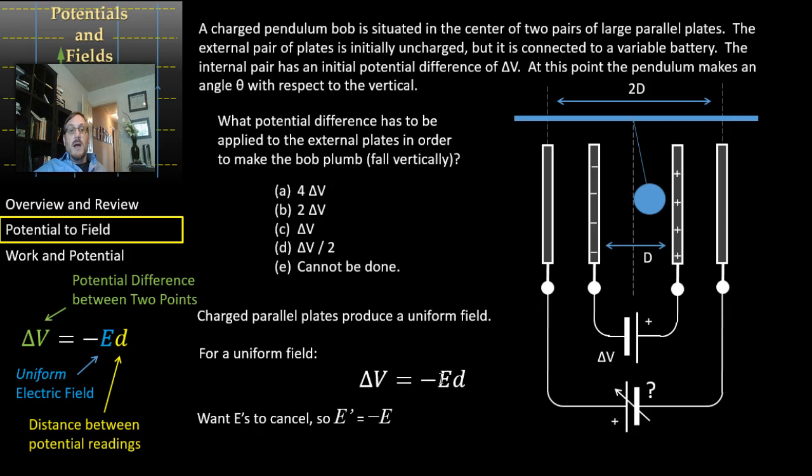When we look at the ΔV that's going to go on this lower battery, that's going to have to be minus minus E, which is just E times 2d, or twice the distance here.